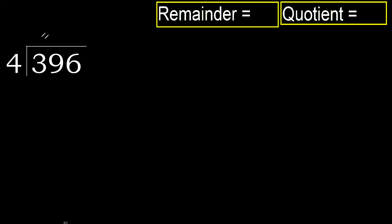396 divided by 4. 3 is less, therefore next. 39 is not less, therefore we work with 39.